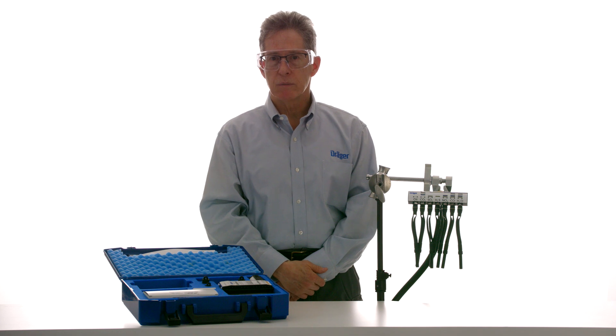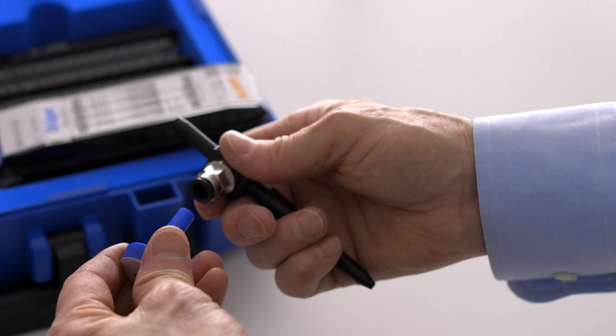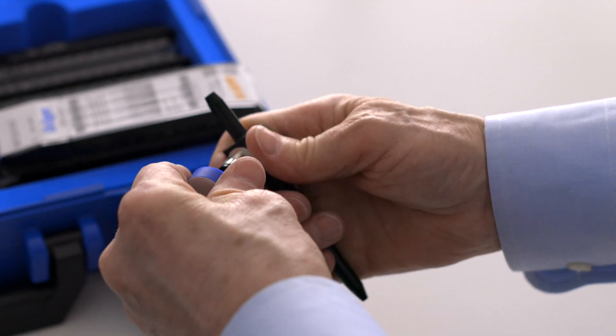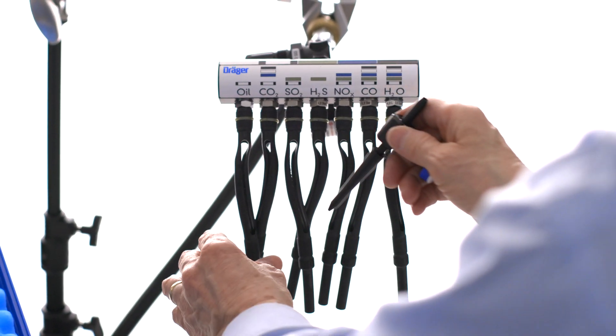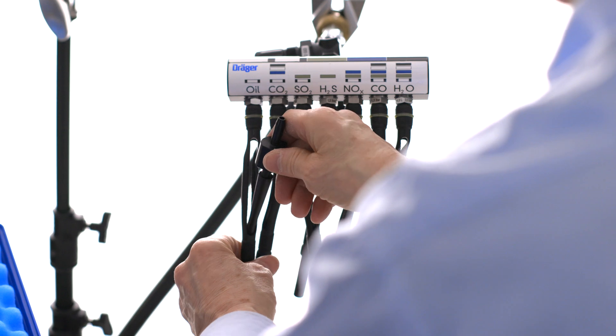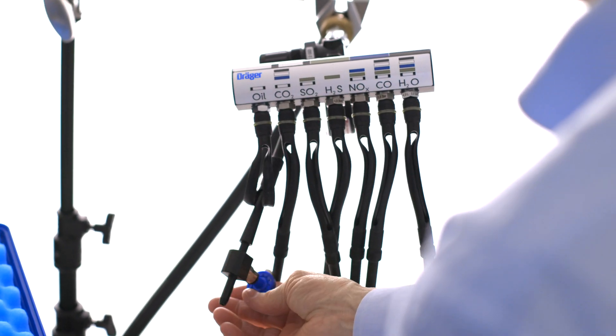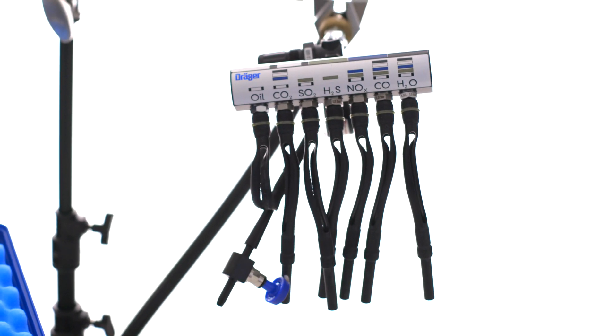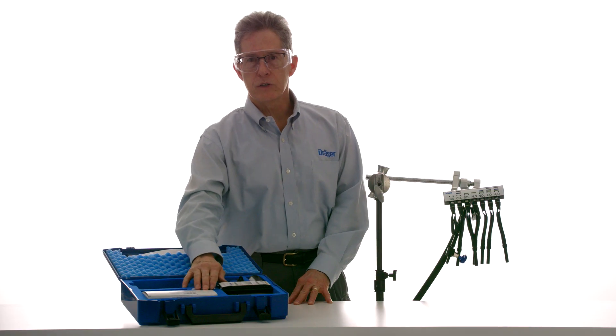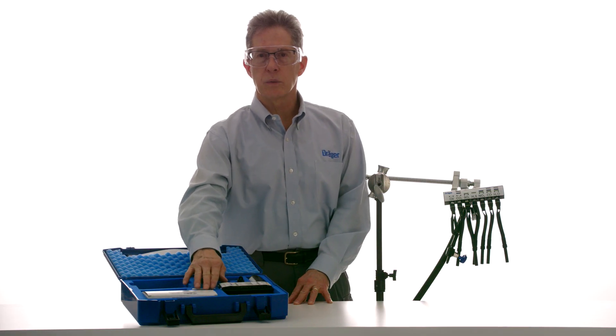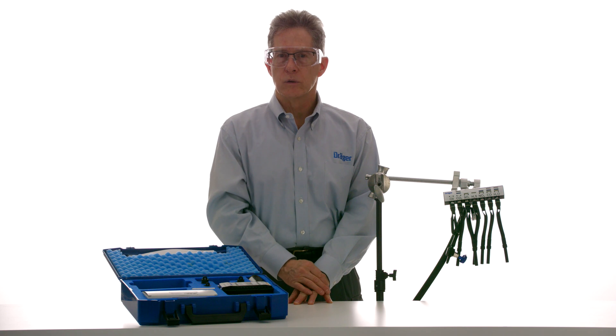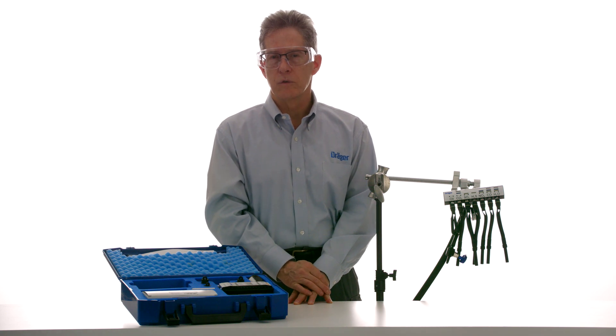Now we can start the preassembly of the impactor and the tubes. Attach an oil impactor to the impactor adapter. Insert the adapter into the bottom of the holder designated for oil. Leave the top hanging for now. Drager replaced the oil tube with the oil impactor some years ago because the impactor displays mineral oils and synthetic oils independent of the oil type or viscosity.